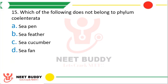Question twenty-five: which of the following does not belong to phylum Coelenterata? Option A, sea pen; option B, sea feather; option C, sea cucumber; or option D, sea fan? The correct answer is option C, sea cucumber. Sea cucumber actually belongs to the phylum Echinodermata.